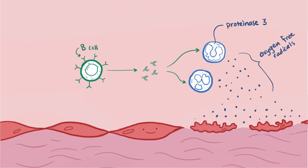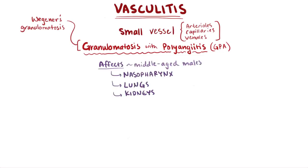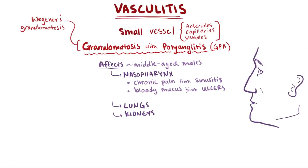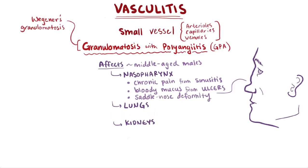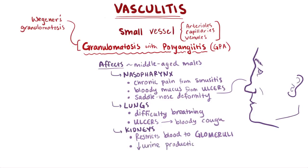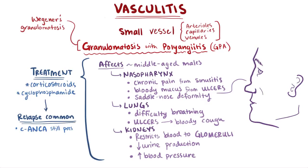On biopsy, GPA shows granulomas in the blood vessel wall. GPA affects the nasopharynx, lungs, and kidneys, usually in middle-aged males. Symptoms include sinusitis, bloody mucus, and potentially saddle nose deformity as the nose caves in. Lung involvement causes constricted airways and bloody coughing. Kidney involvement restricts blood flow to the glomeruli, reducing urine production and increasing blood pressure. GPA is treated with corticosteroids and cyclophosphamide, but relapses are common since C-ANCA continues attacking neutrophil granules.